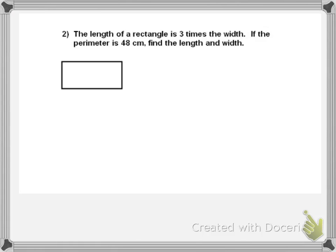In this problem, the length of a rectangle is 3 times the width. So, if my width is W, my length is 3W. And the perimeter is 48. So, back to my perimeter formula. 2L plus 2W equals perimeter. Perimeter is 48.